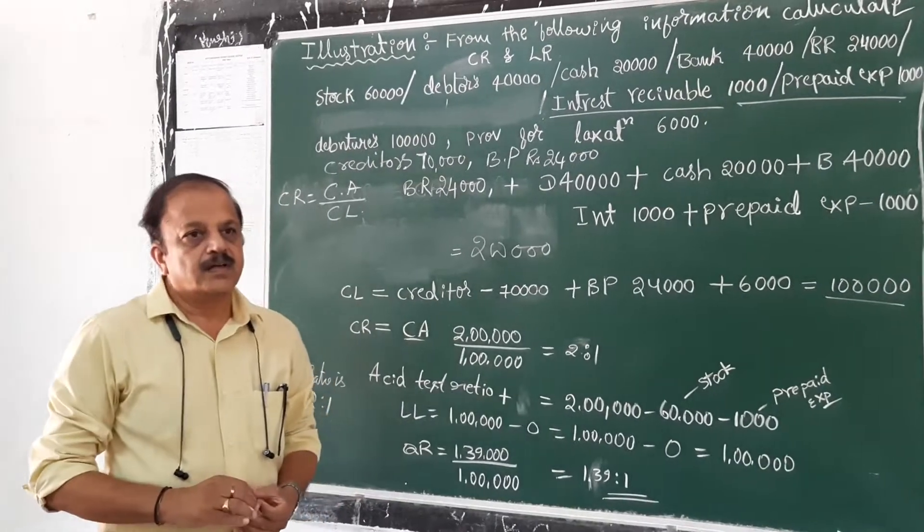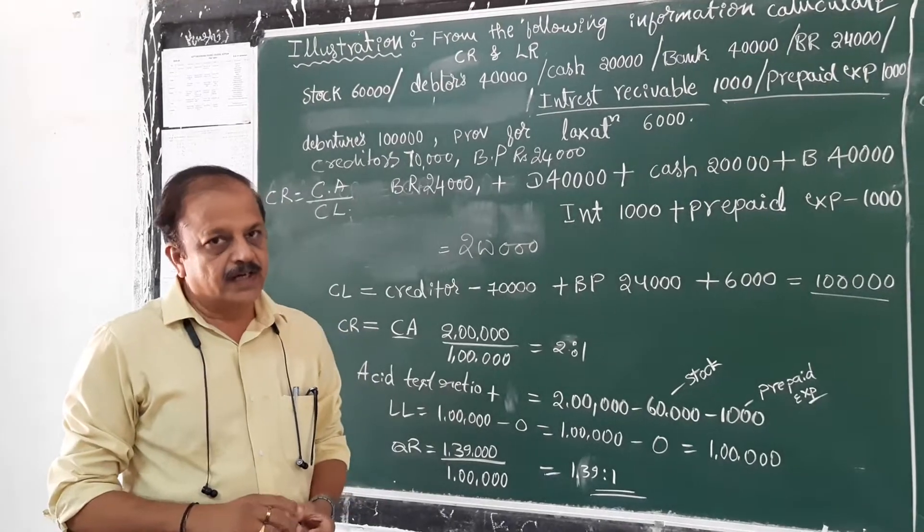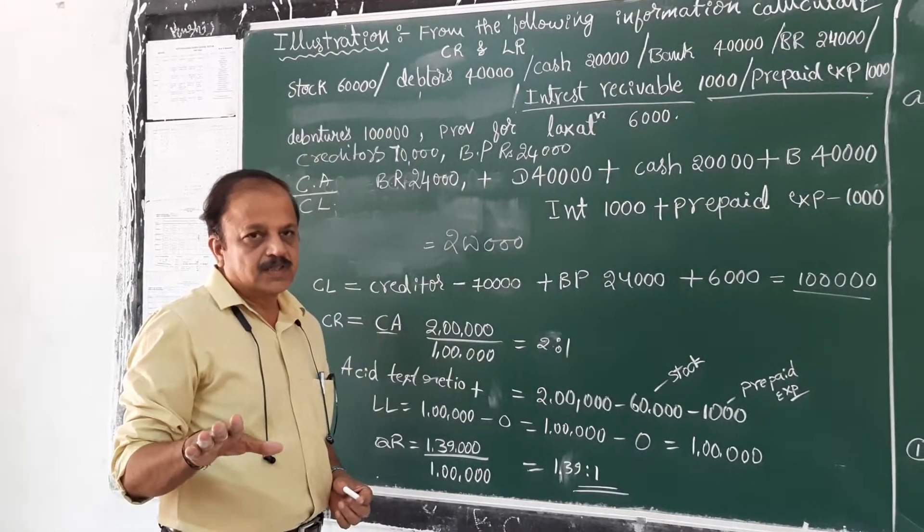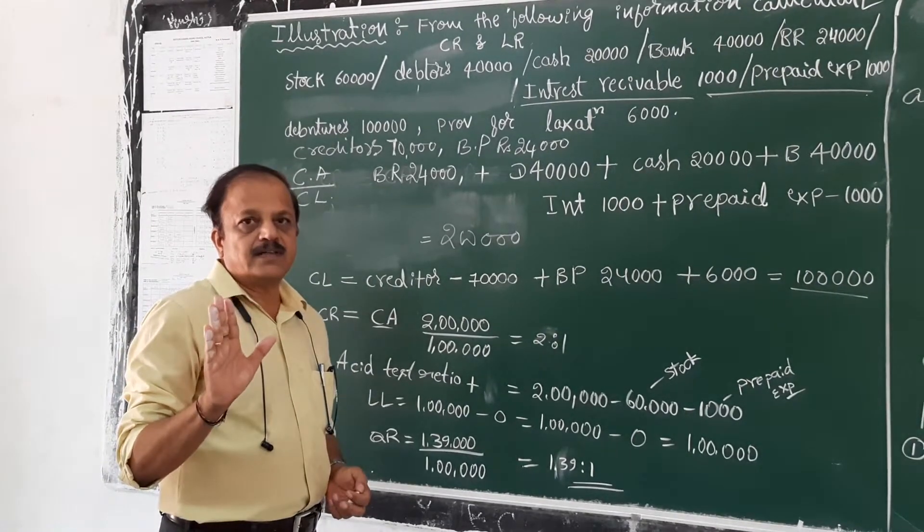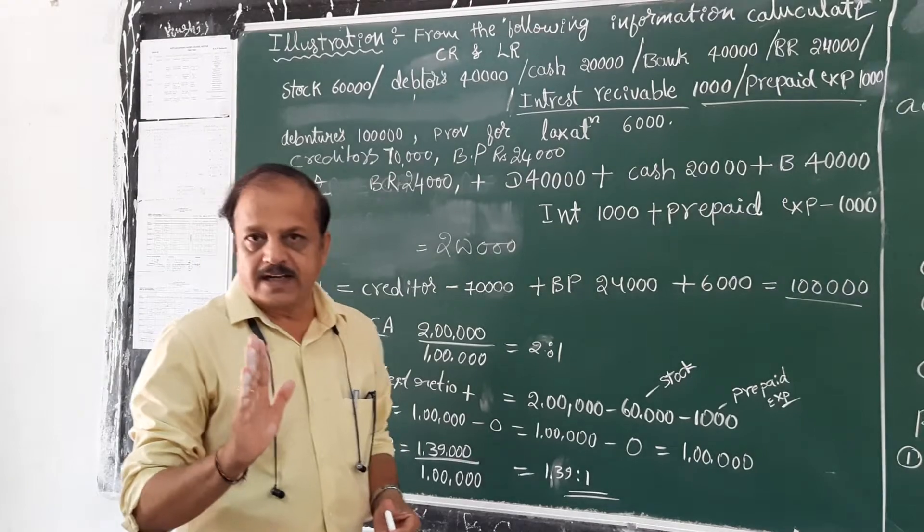Let us solve a small problem on current assets and liquid assets. As I told you earlier, the formula of current ratio is current assets divided by current liabilities.